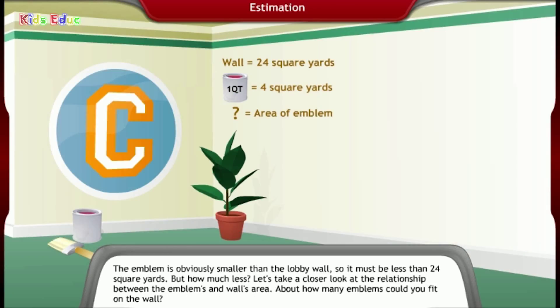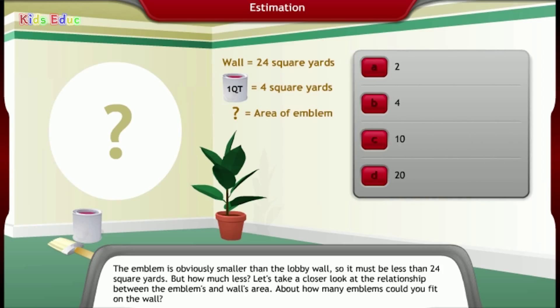The emblem is obviously smaller than the lobby wall, so it must be less than 24 square yards. But how much less? Let's take a closer look at the relationship between the emblems and the walls area. About how many emblems could you fit on the wall? 2, 4, 10, 20.